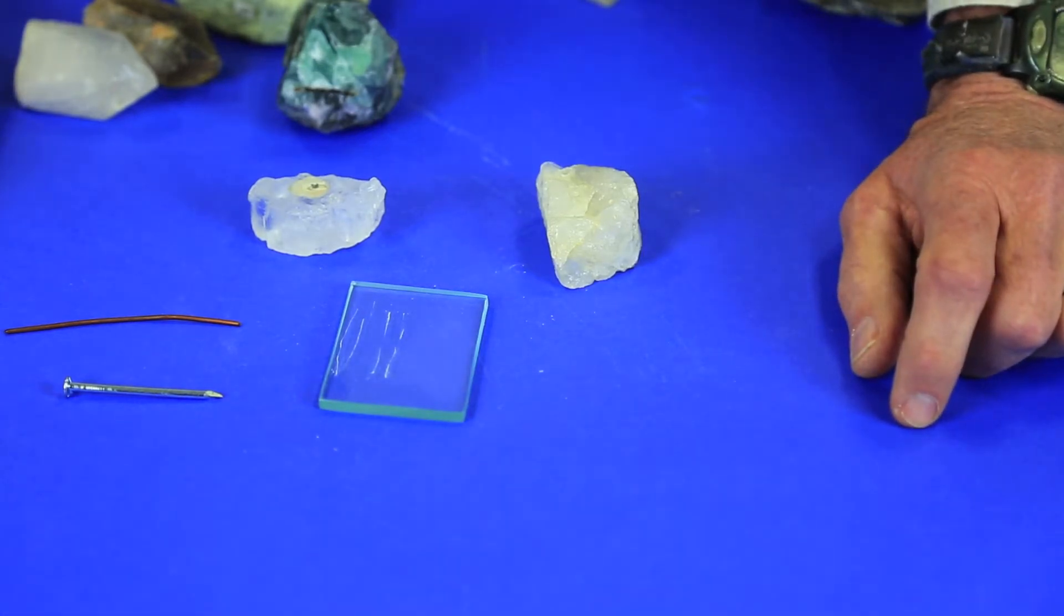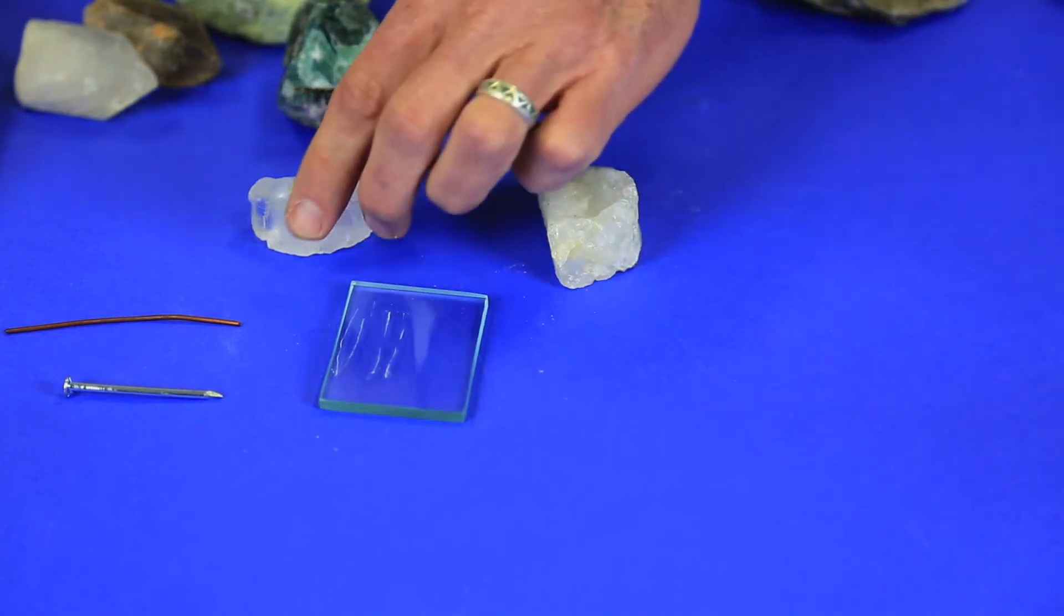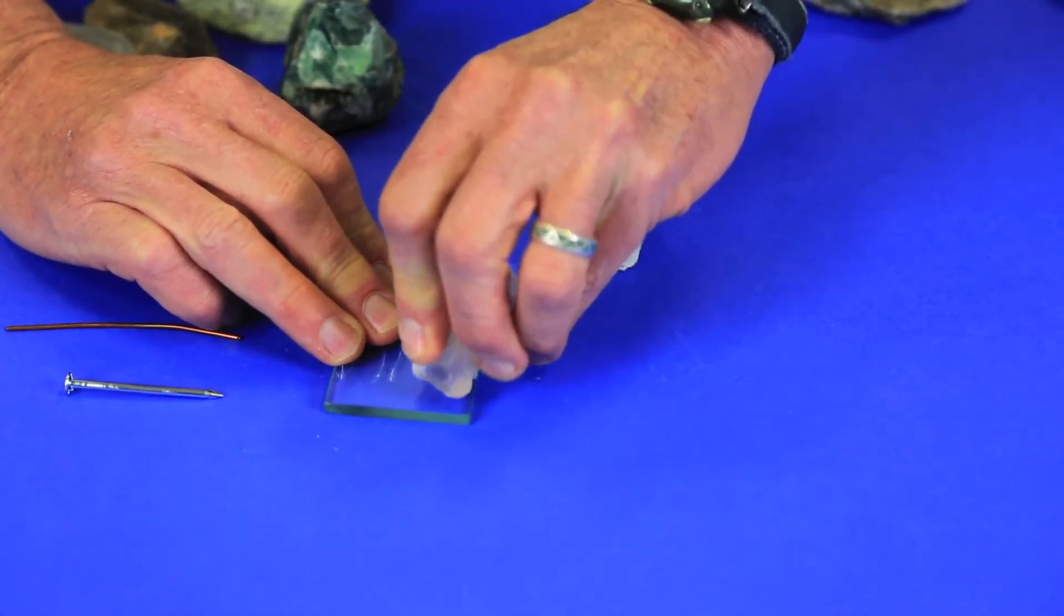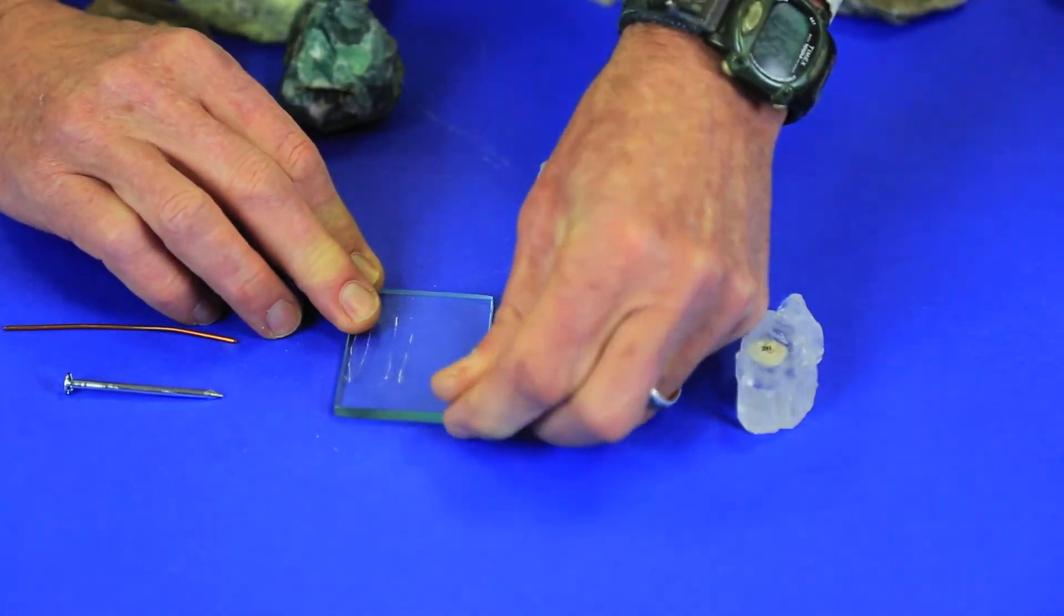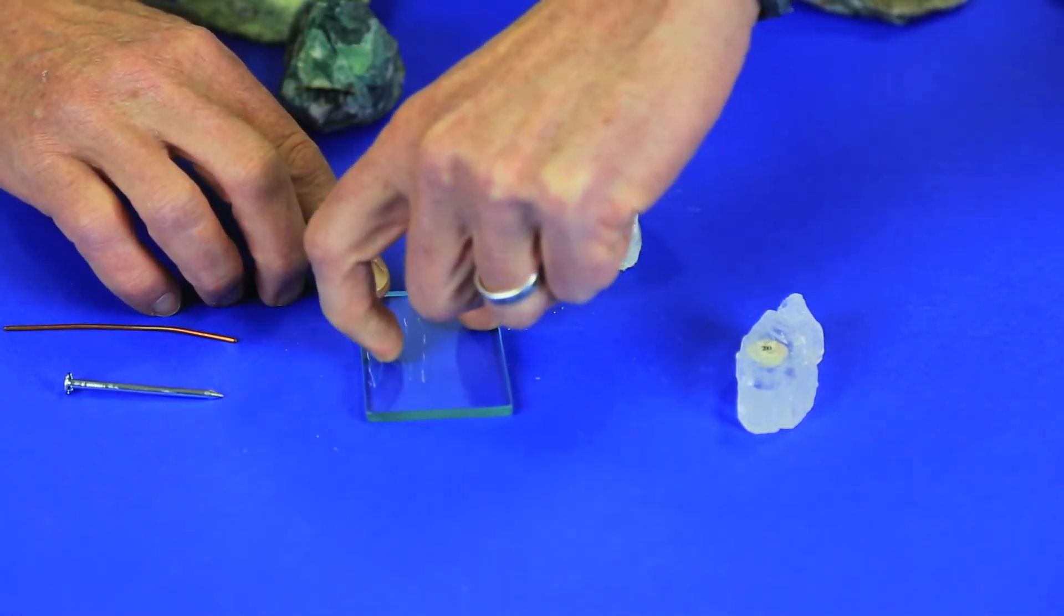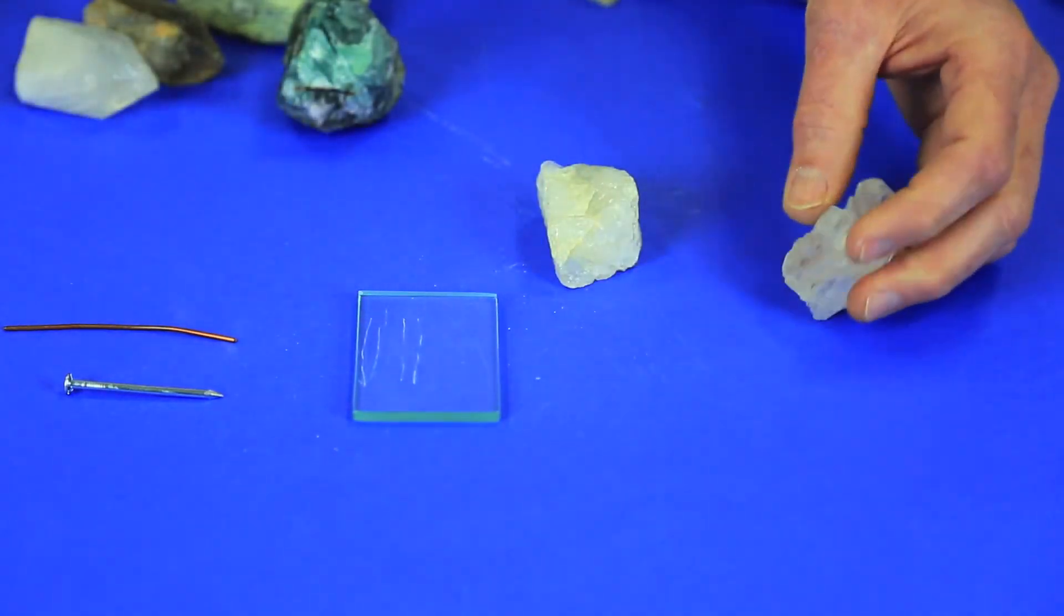Keeping in mind that there are a couple of issues that can go on during the hardness test. Number one, if your mineral is softer than the glass plate, it's possible for you to leave a powder of your mineral on the glass plate. So you should try to wipe it away with your finger or use your fingernail to see if you can feel the scratch that you might have left on the glass plate. Examine that very closely before you determine the hardness.